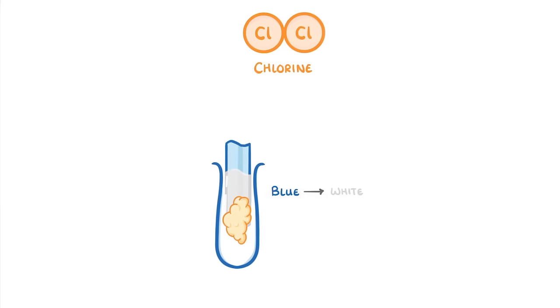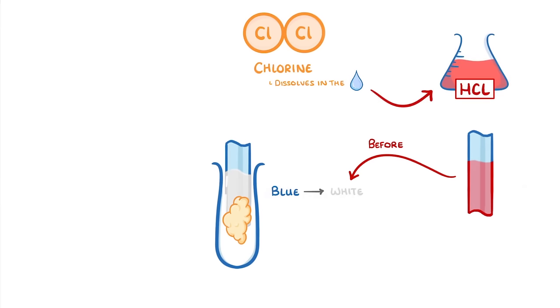Something to be aware of though, is that you might sometimes find that the paper briefly turns red before turning white. This is because the chlorine dissolves in the water on the damp paper and forms hydrochloric acid, which because it's acidic will turn the blue litmus paper red. However, the paper will then quickly go white as it gets bleached by the chlorine.